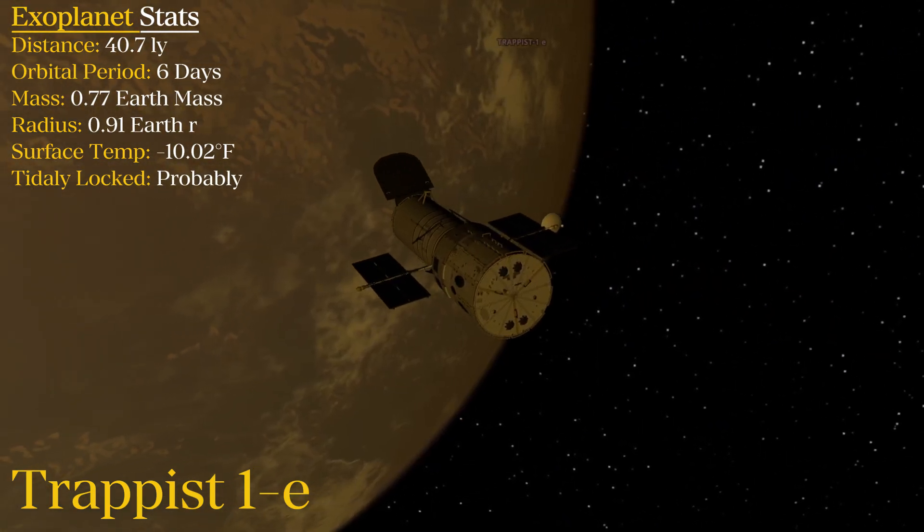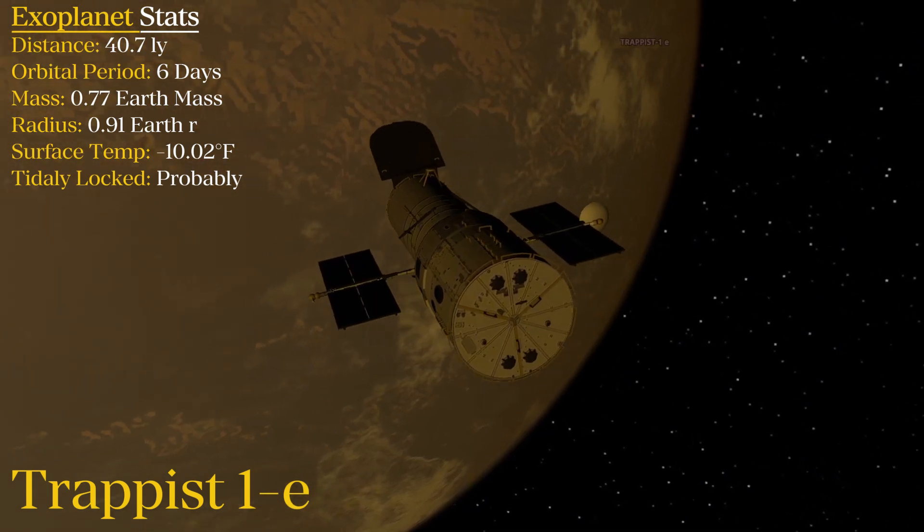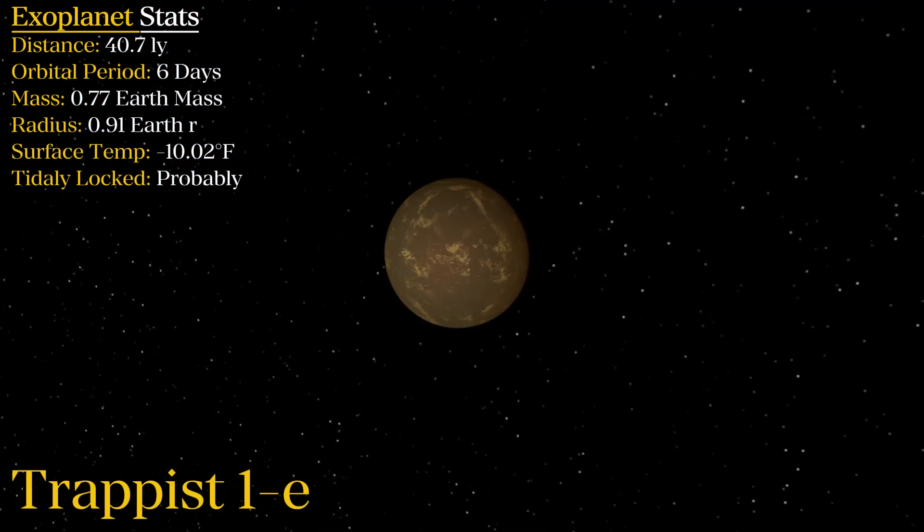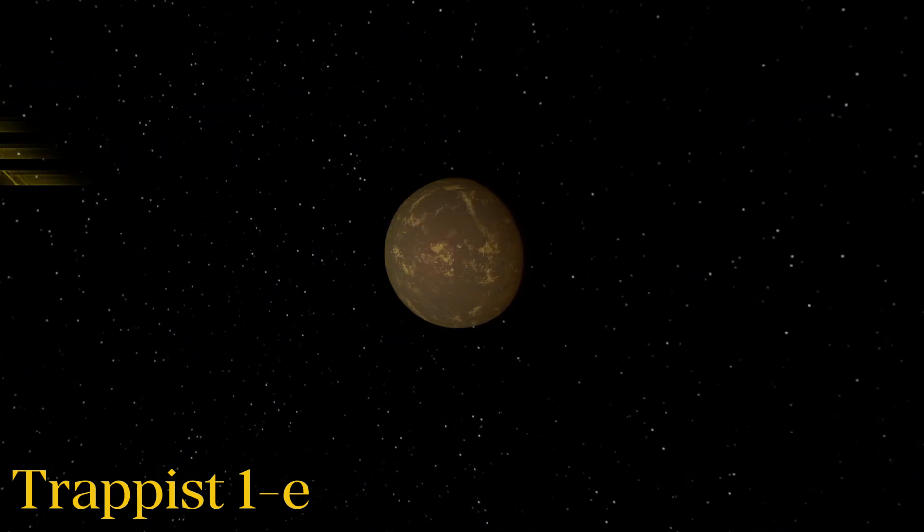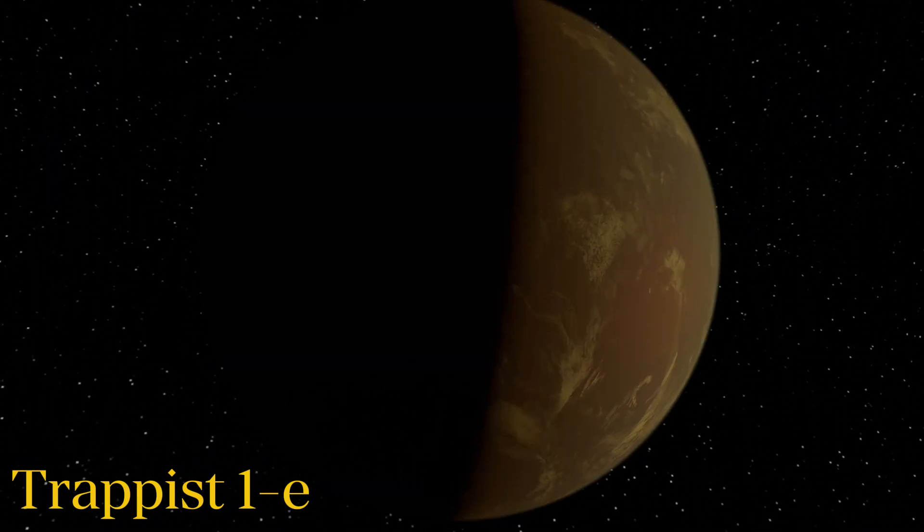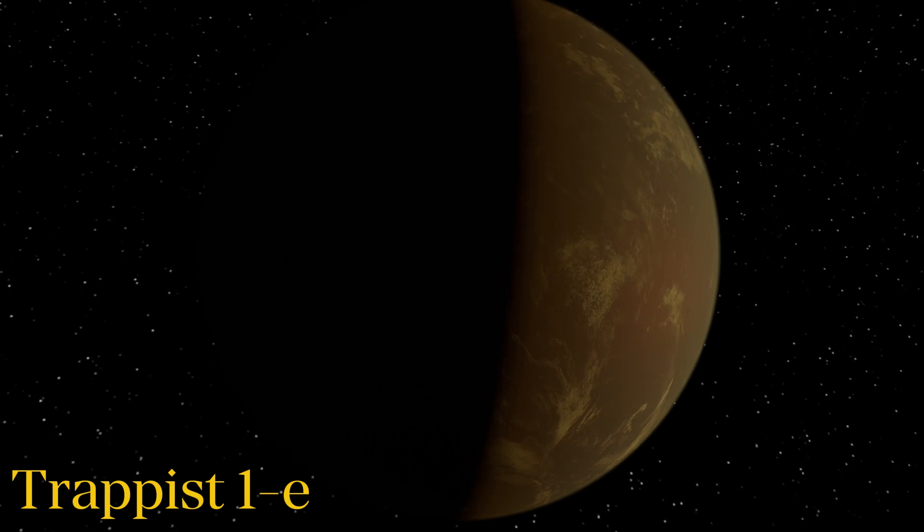A detailed study of this planet in 2018 discovered that compared to Earth it is 91% the radius, 77% the mass, 102.4% the density, and 93% the surface gravity.